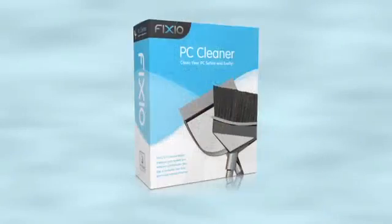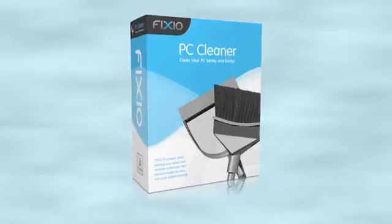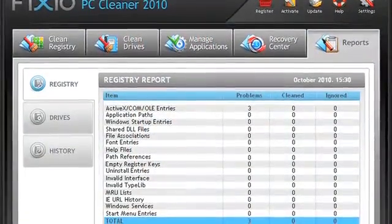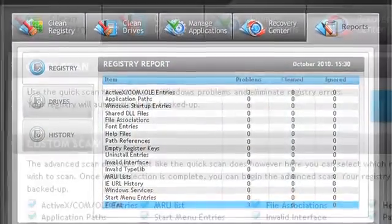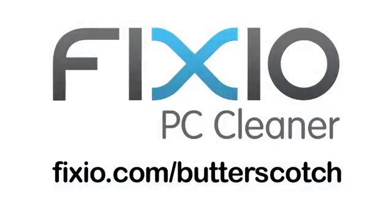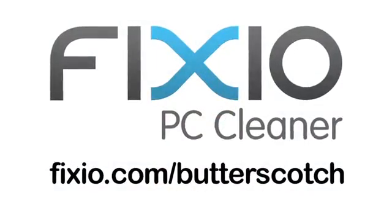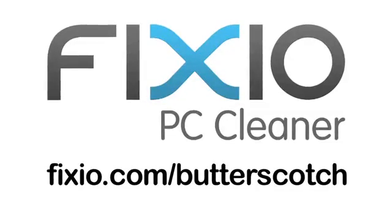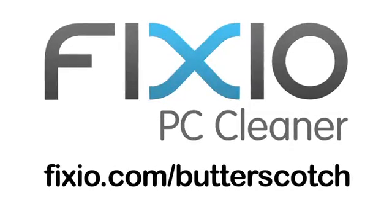Over time, your PC can become sluggish due to the accumulation of errors, corrupted files, and system clutter. One of the top tools available is Fixio PC Cleaner. With a few easy clicks, your PC will be automatically analyzed and scanned for potential issues that could be affecting your computer's performance. Repair annoying errors and get your PC running like new again with Fixio PC Cleaner. Visit fixio.com/butterscotch to get your free PC scan and receive a special offer available only to Butterscotch users.